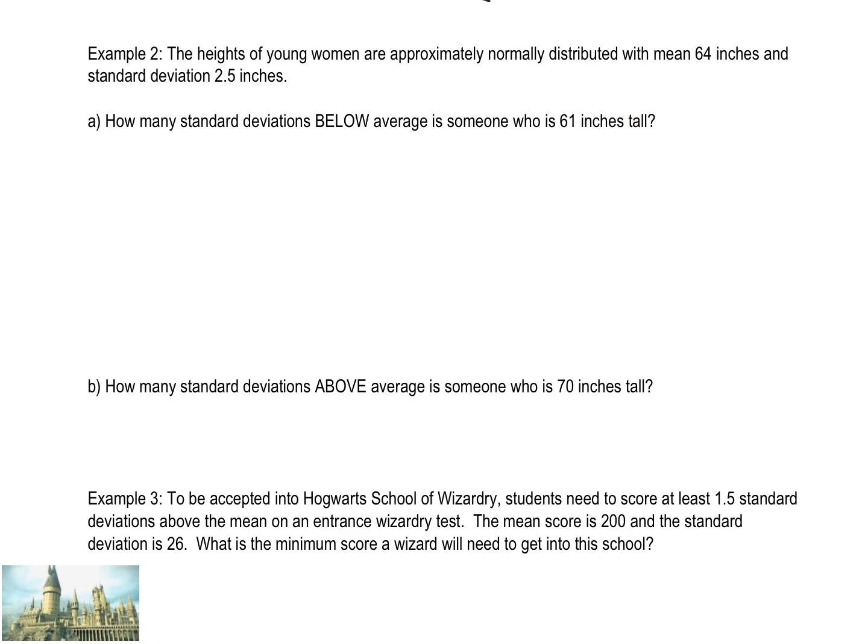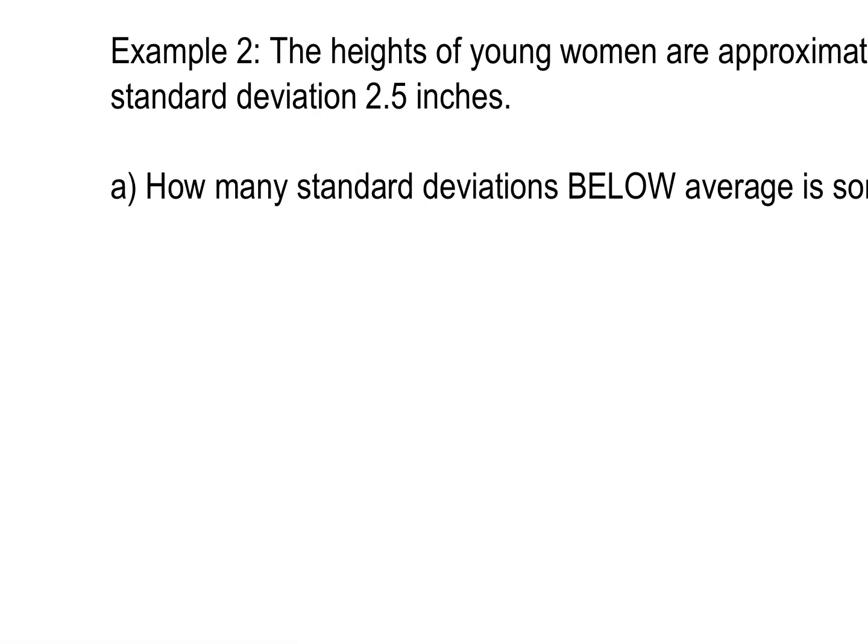How many standard deviations below average is someone who's 61 inches tall? So if your height is 61 inches, and we have a certain mean and standard deviation, you want to know what your Z-score is, how far below average are you? So you're 3 inches below average, but how far is that in terms of Z-scores? How many standard deviations away are you? So we're going to use our Z-score formula, X minus the mean over the standard deviation.